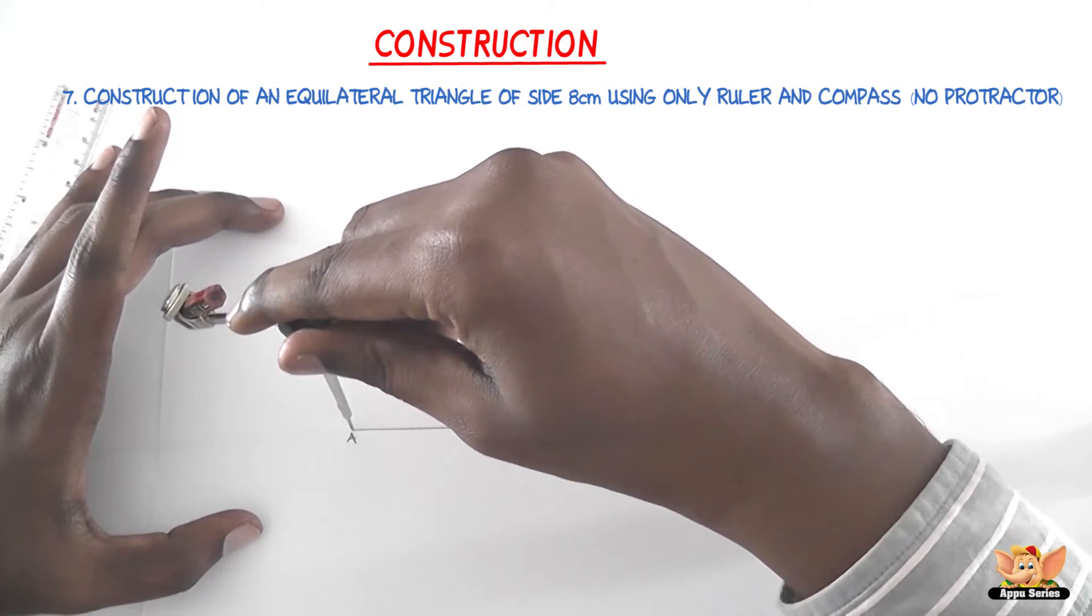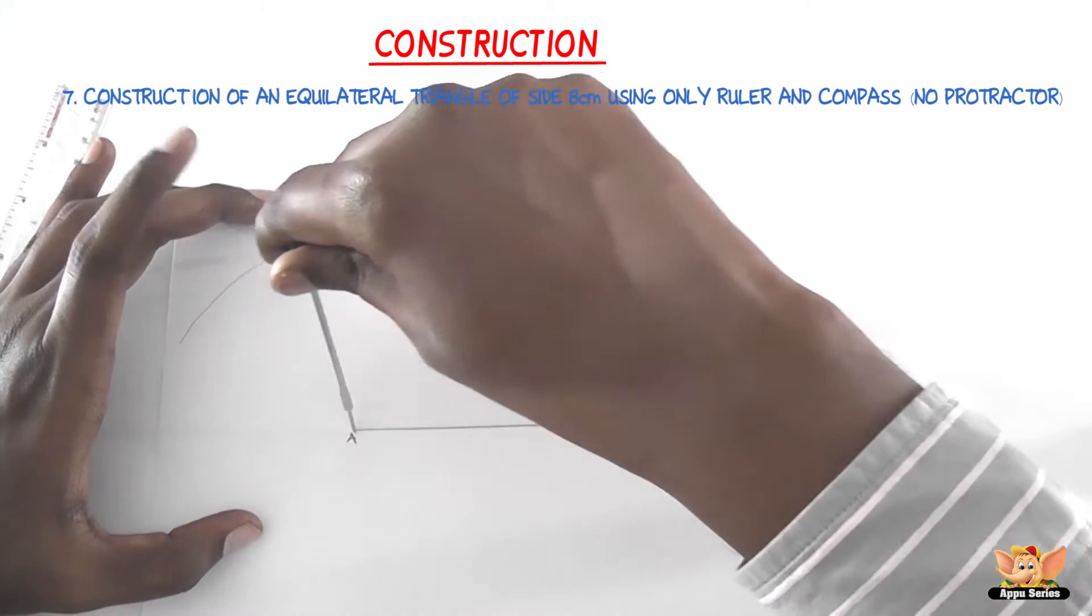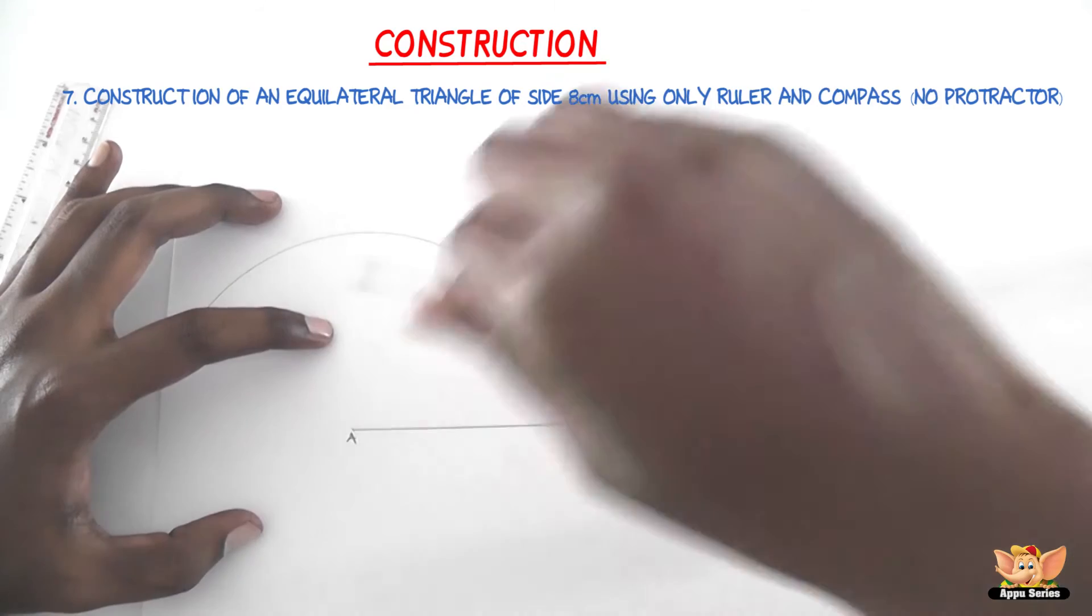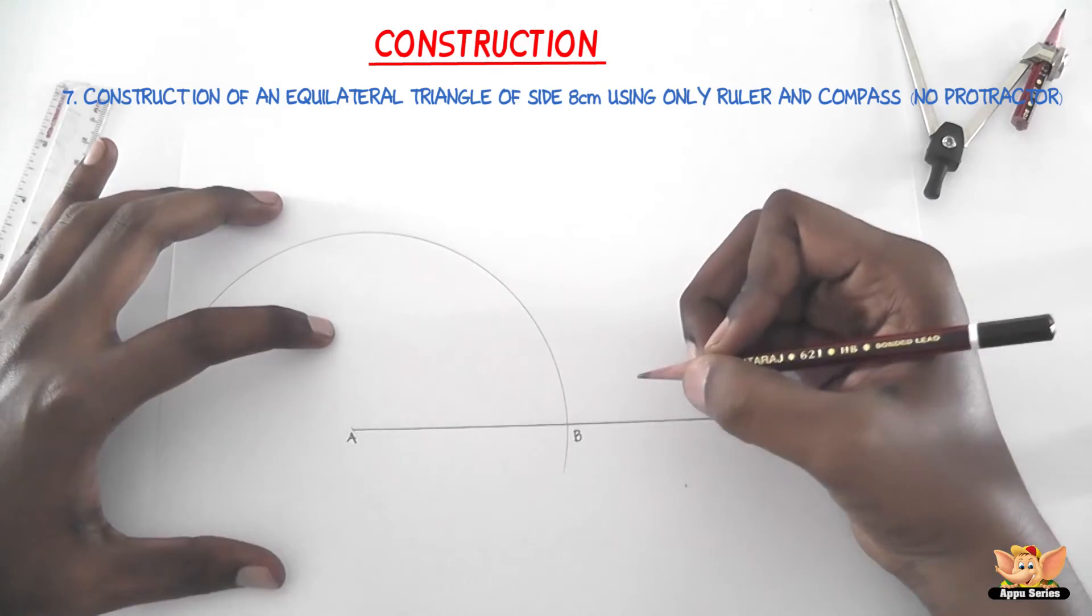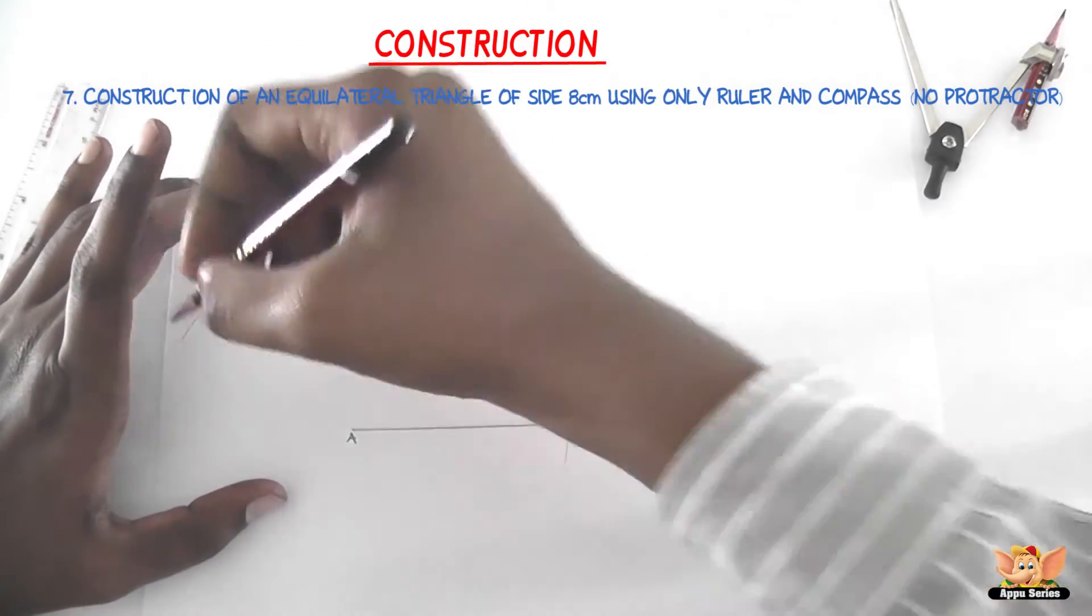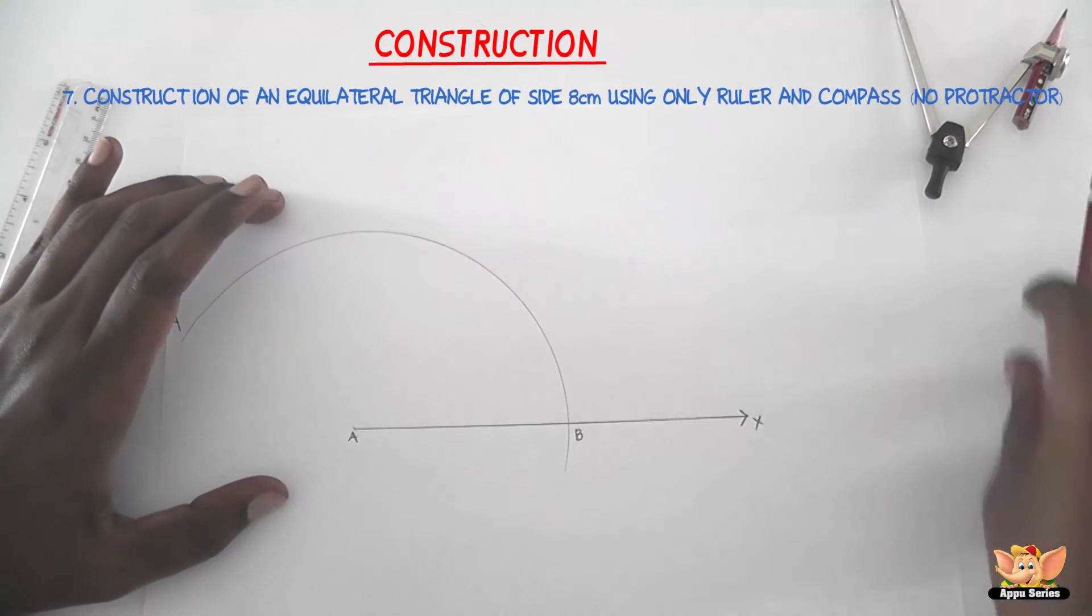So with A as center and radius equal to the length of the side, draw an arc By, cutting the ray Ax at B, which is what I'm going to do now. So here we have. So this arc cuts the ray Ax at B, and let me name this as Y. So we have drawn an arc By.